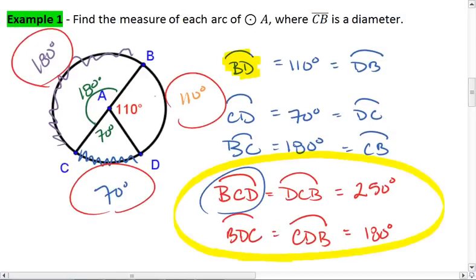as we saw above, arc BCD is formed by arc CD plus arc CB. 70 plus 180.